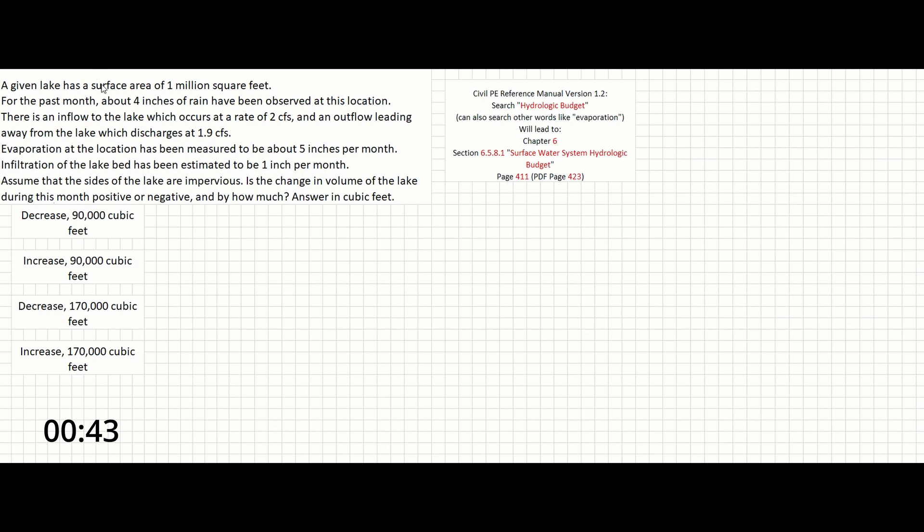This problem starts out by giving you a lot of information, however in this case all of it is actually useful. If you're able to recognize it, it's giving you components of the hydrologic budget. That's something we can find in chapter 6 of the reference manual. Even if the words hydrologic budget don't come back to you, you could try to search something else like evaporation and if you're lucky it will lead you to the same place.